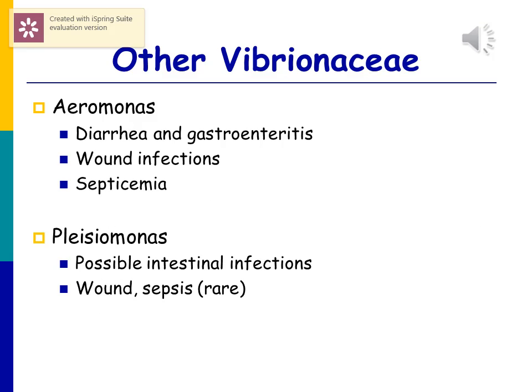The other Vibrionaceae members include Aeromonas, which can cause diarrhea and gastrointestinal tract infections as well as wound infections and septicemia. There's also Plesiomonas, which possibly causes intestinal infections as well as wound infections and sepsis, though that's rare.